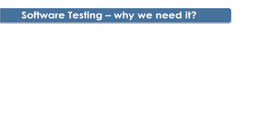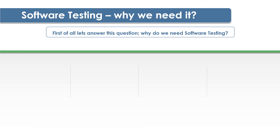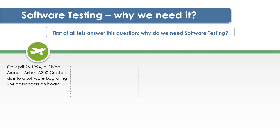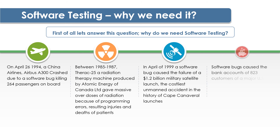When we talk about testing, we talk about bugs, errors, and maybe failures. We need to understand why we need software testing and why it is so important to have defect-free software. There have been instances in the past which resulted in loss of life and loss of millions of dollars. For example, on April 26, 1994, a China Airlines Airbus A300 crashed due to a software bug, killing 264 passengers on board. There have been multiple such incidents which resulted in a bug or failure in a software system.